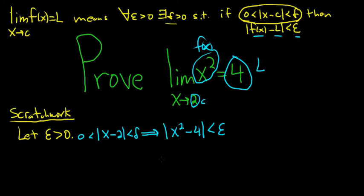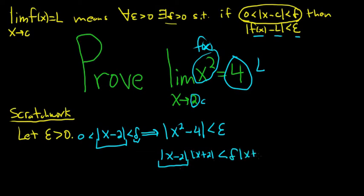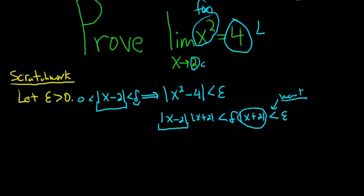This factors — it's a difference of squares. And we know that the absolute value of x minus 2 is less than delta, so we can replace that with delta, giving us delta times |x + 2|. We want this to be less than epsilon. This is where everyone gets stuck in this problem — they don't know how to deal with the absolute value of x plus 2. Let me show you how to do that.